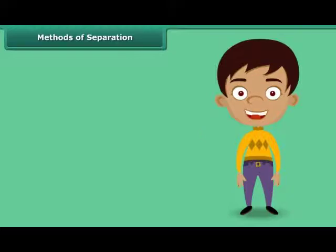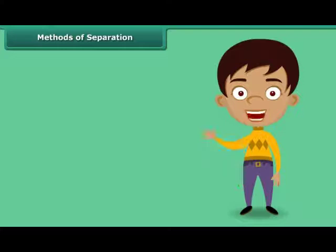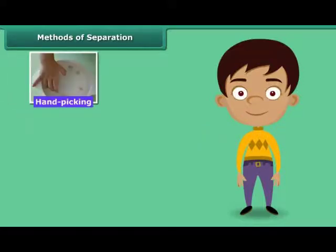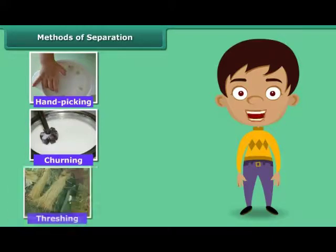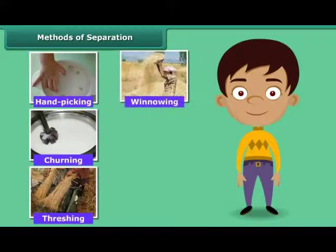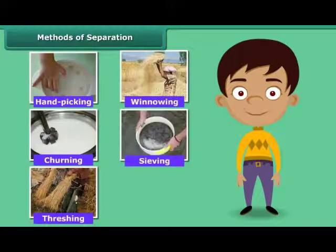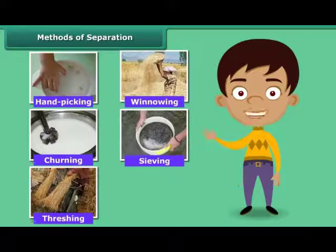You sure would have some idea about the methods of separation. In fact, you would have used some of these methods in your day-to-day life. Let us list some methods commonly used to separate the components of a mixture: hand-picking, churning, threshing, winnowing, and sieving. The basis for choosing a method of separation depends upon the physical properties of the components.